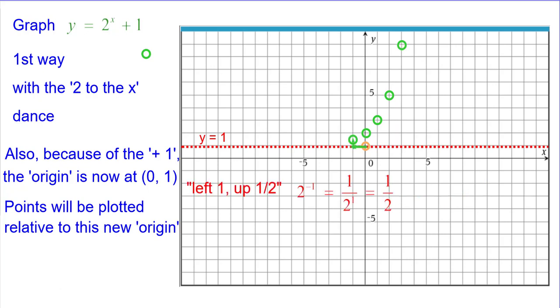Going in the negative direction, left 1 up a half because 2 to the negative 1 means the reciprocal of 2, which is a half. Left 2 up a fourth. 2 to the negative 2 is 1 half squared, which is 1 fourth. And left 3 up 1 eighth because 2 to the negative 3 power is the reciprocal of 2 to the third, which is 1 eighth.